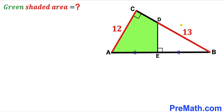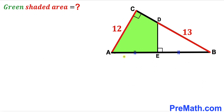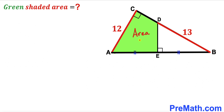Welcome to PreMath. In this video we have a right triangle ABC along with a perpendicular DE, as seen in the diagram. As a result we get the green shaded quadrilateral EACD. Moreover, segment BD is 13 units, side length AC is 12 units, segment AE is equal to segment BE, and our task is to calculate the area of the green shaded region.